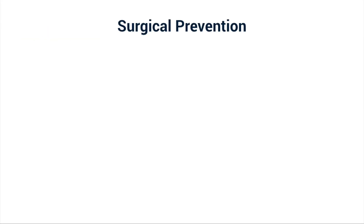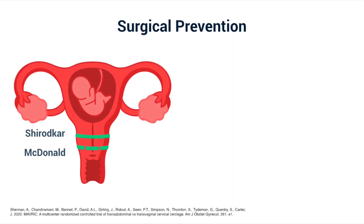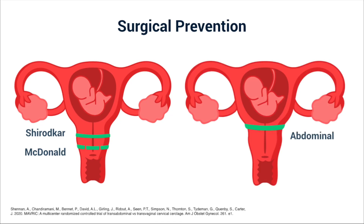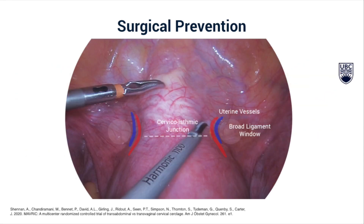There are both medical and surgical options for the treatment and prevention of cervical insufficiency. McDonald and Shirodkar cerclage are placed vaginally; the McDonald cerclage is performed most commonly targeting the external os. Open abdominal cerclage was first introduced in 1965 and has since been translated safely to a minimally invasive approach. Placement of an abdominal cerclage at the level of the cervico-isthmic junction maintains the integrity of the cervix at the level of the internal os.